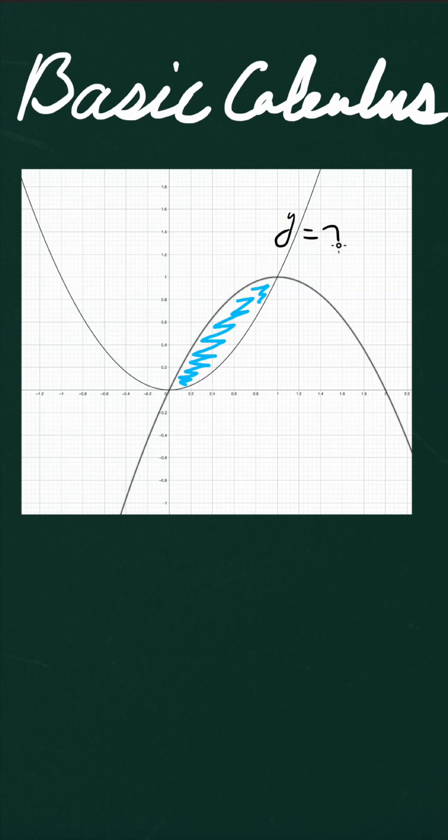We have two functions: y equals x squared and the other one is y equals 2x minus x squared. The question asks us to find the shaded area between the curve of these two functions.